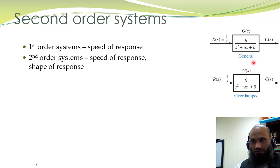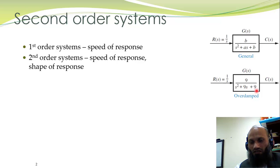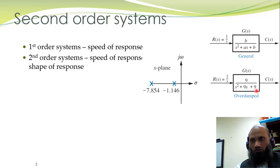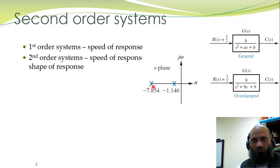Let's talk about some particular examples. Here we have the transfer function of a second order system, which has two poles because the degree of the denominator polynomial is 2. This polynomial will have two roots which are the poles of the system. One root is at s equal to minus 1.146 and the second root is at s equal to minus 7.854.